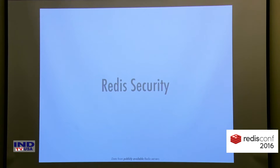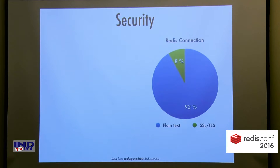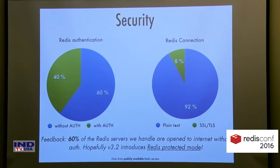Next up: Redis security. Security starts with how we connect to Redis. We found that only 8% of the publicly available Redis servers connected to us using a TLS connection, thanks to Microsoft Azure Redis Cache and Redis Labs that provide such a feature. Next up was Redis authentication — the results are still quite alarming. Only 40% had authentication configured, and remember, we only talk here about publicly available Redis servers. Hopefully, 3.2 introduces Redis protected mode that will restrict users from exposing their Redis server to the internet.